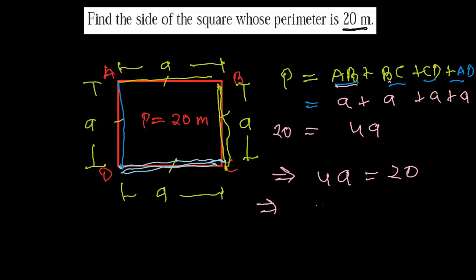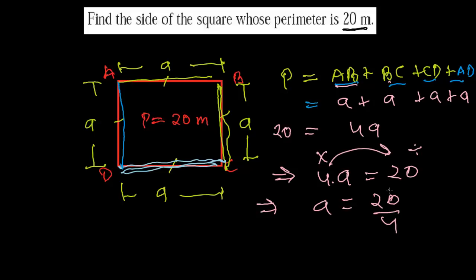Here 'a' represents the side. Since 4 is multiplying, when it moves to the other side it will divide: a = 20 ÷ 4 = 5. So 5 meters is the side of this square.